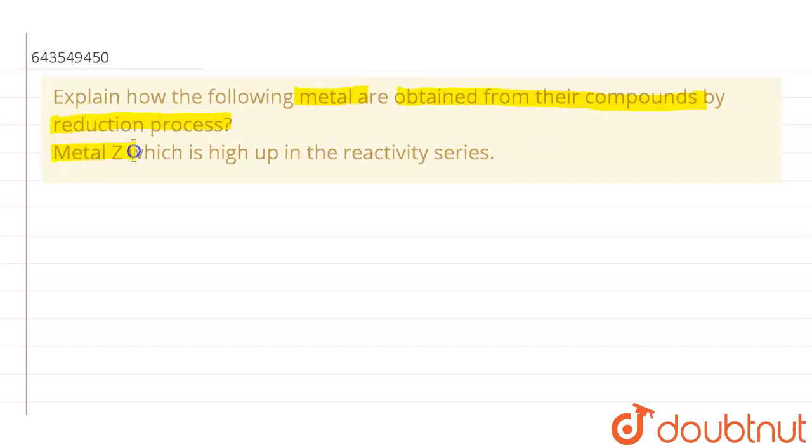Metal Z which is high up in the reactivity series. The metals which are at a higher reactivity position in the reactivity series, for example, sodium, potassium, calcium, magnesium and aluminium.